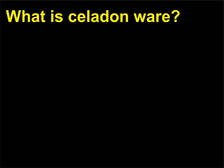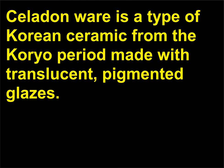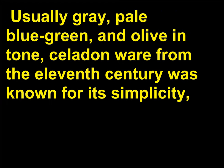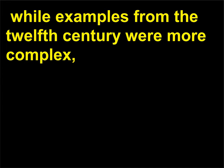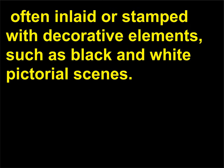What is Celadon Ware? Celadon Ware is a type of Korean ceramic from the Goryeo period made with translucent, pigmented glazes — usually gray, pale blue-green, and olive in tone. Celadon Ware from the 11th century was known for its simplicity, while examples from the 12th century were more complex, often inlaid or stamped with decorative elements such as black and white pictorial scenes.